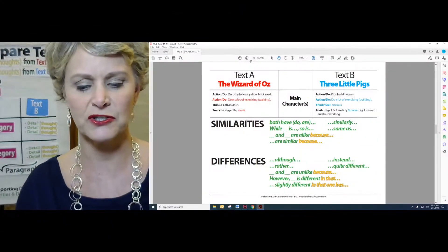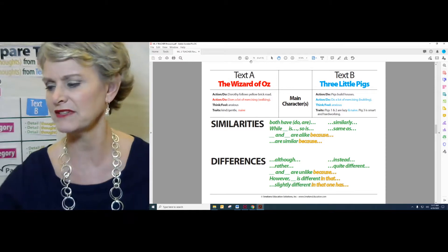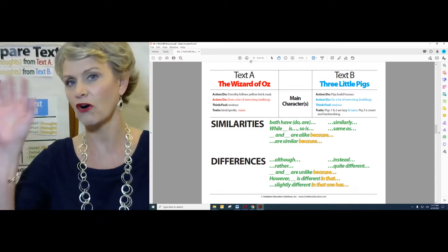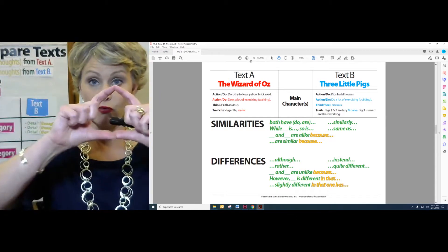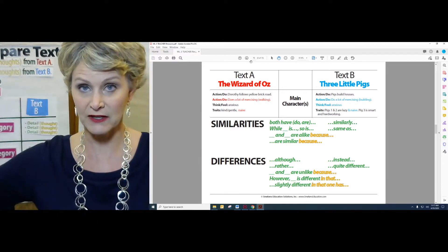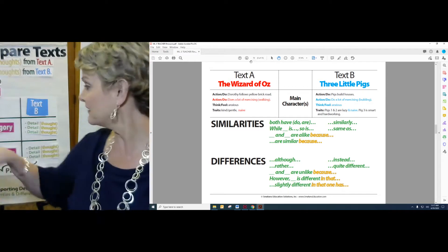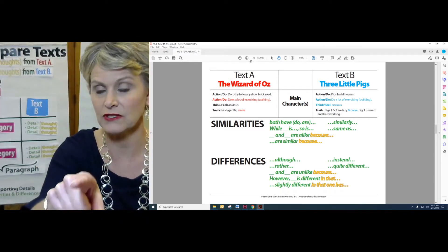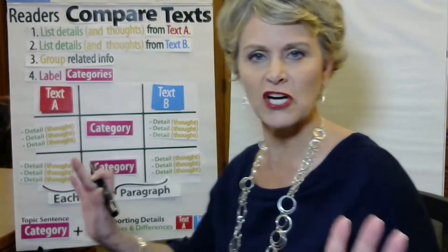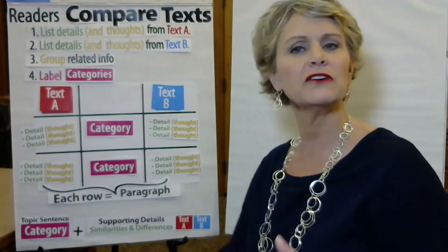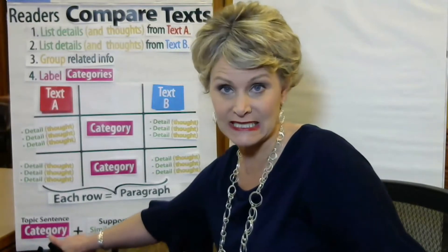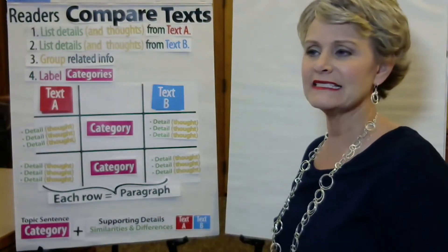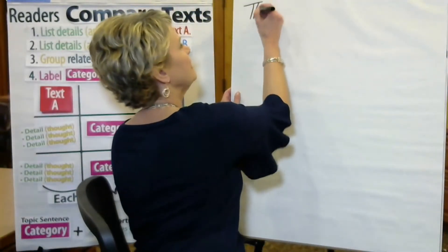Let's see it in action. Let's use what we have already done in terms of work from Wizard of Oz and Three Pigs, because I really just want to emphasize in this lesson the writing — how do you articulate all of this already done thinking in writing? So using previous thinking, let me show you how this would work. I look row by row and I'm going to write a single body paragraph. The focus of this body paragraph is the category, and the category is main characters.